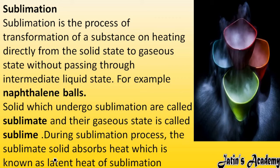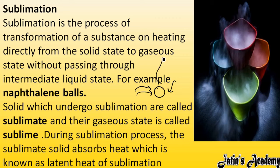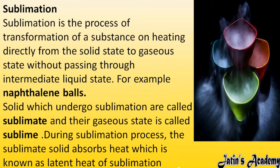During the sublimation process, the sublimate solid absorbs heat, which is known as the latent heat of sublimation. Whenever a naphthalene ball or any similar solid is there, it first takes heat from the surrounding, and only then converts into the gaseous state. That amount of heat absorbed from the environment is known as the latent heat of sublimation.